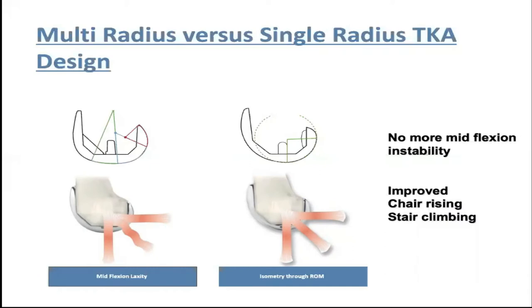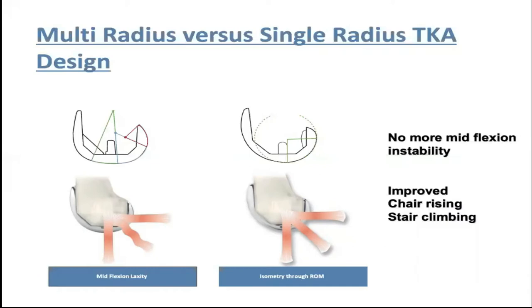A medial pivot knee design seems much more appropriate. Another example is switching from multiradius femoral component designs to more anatomical components. There are two key benefits to single radius knees with important implications. In contrast to single radius designs, multiradius designs are flat at mid-flexion, which loosens the collateral ligaments and creates mid-flexion instability. As a consequence, patients have difficulty getting up from chairs or climbing stairs. Unfortunately, these designs were based on two-dimensional analysis of the knee joint in lateral view.